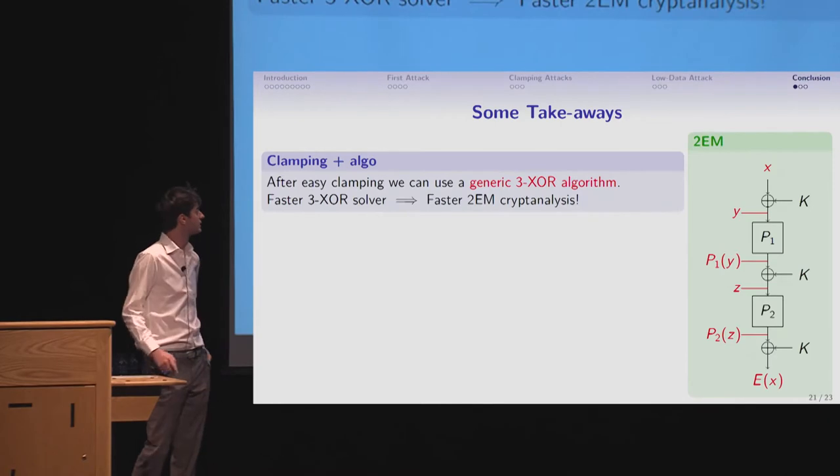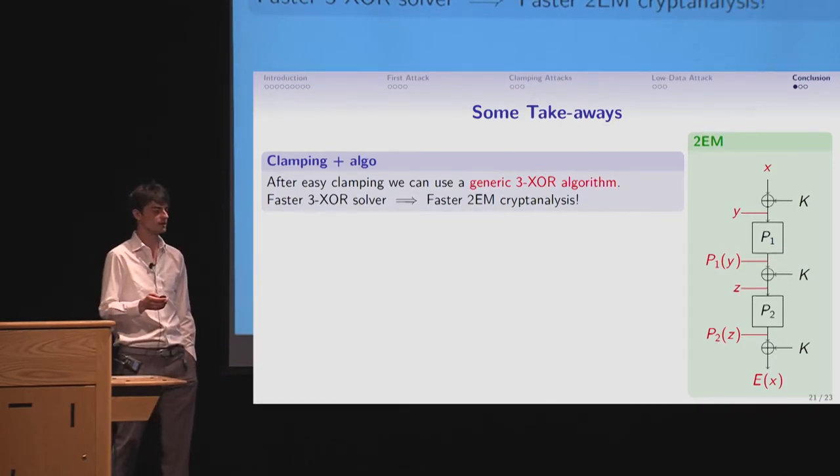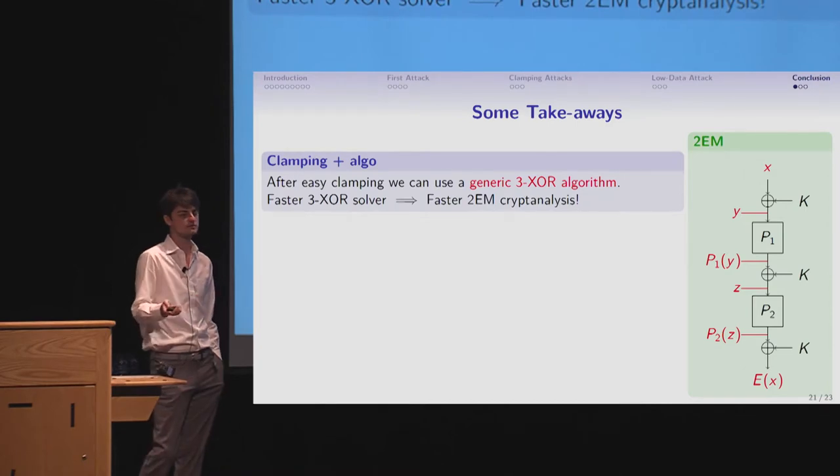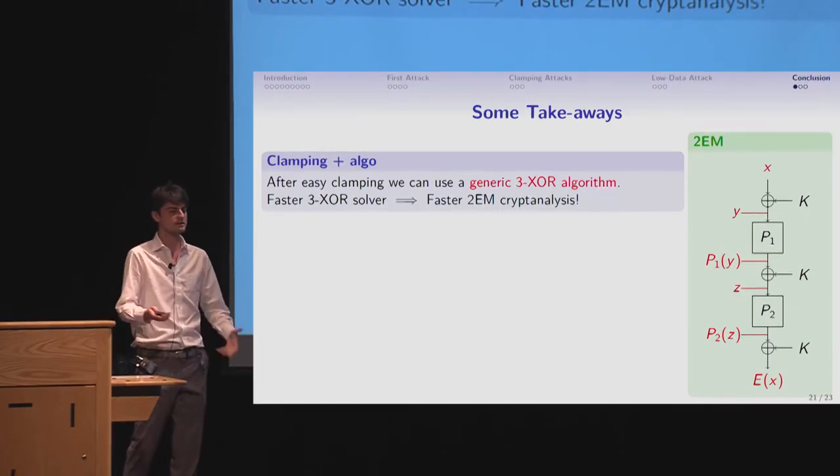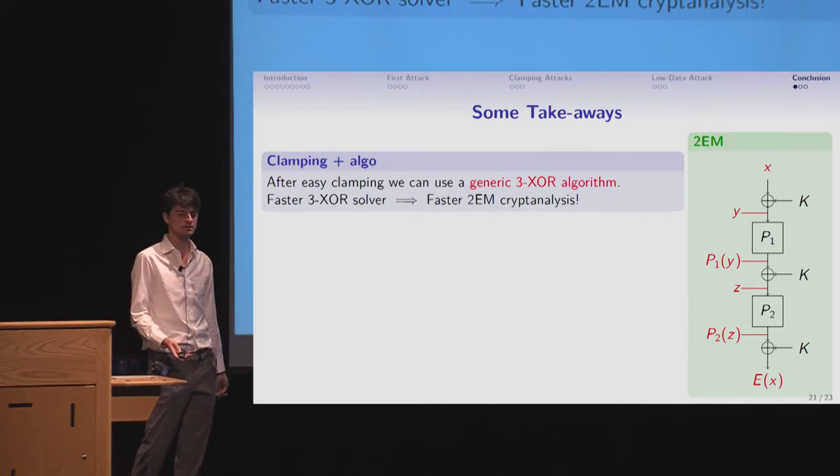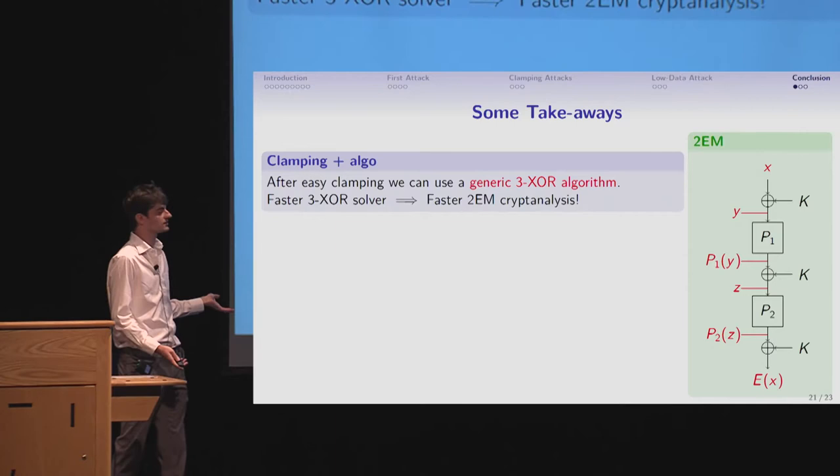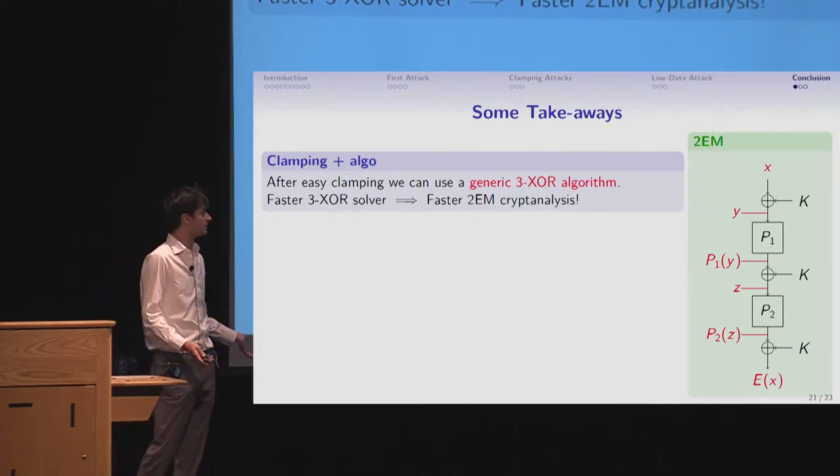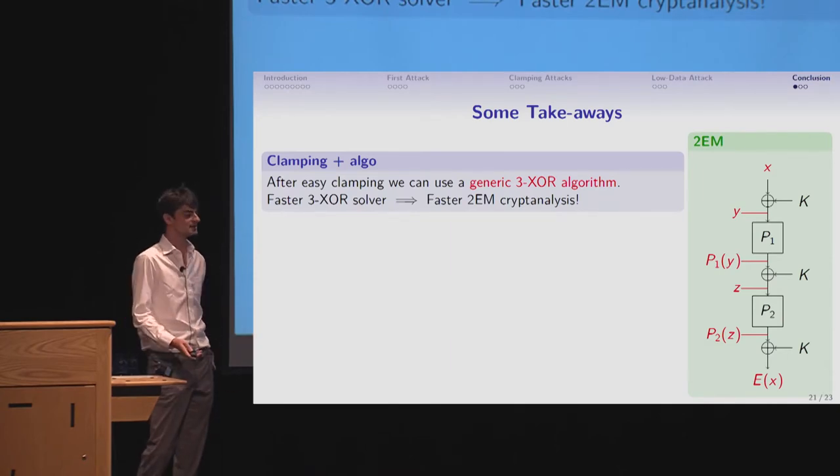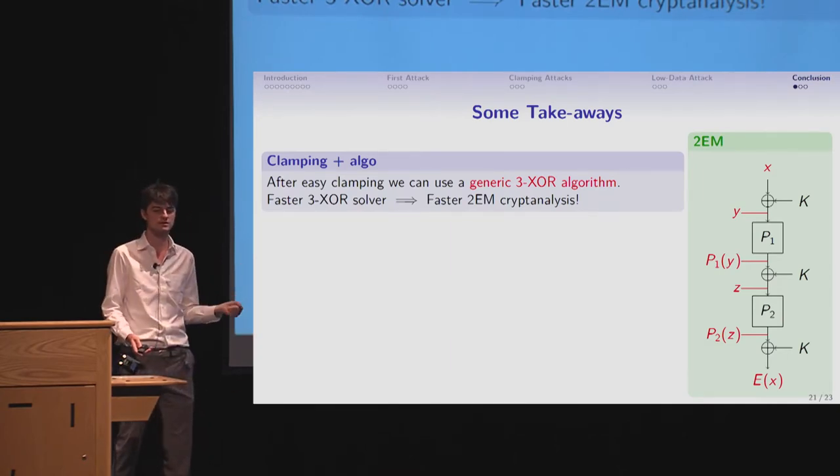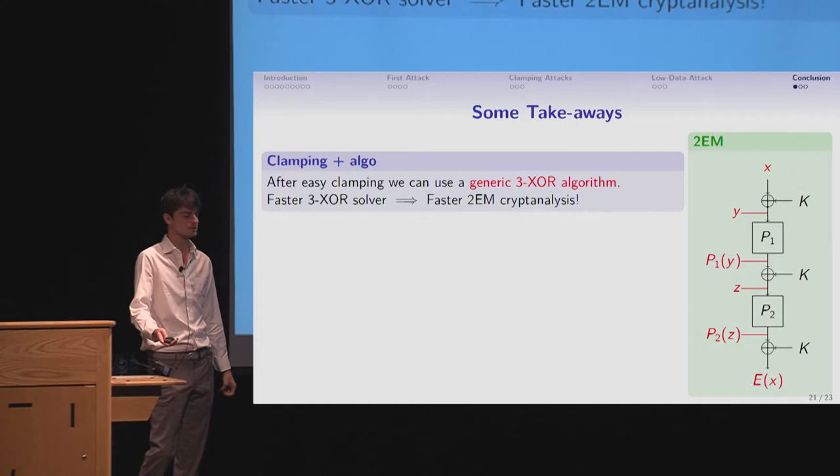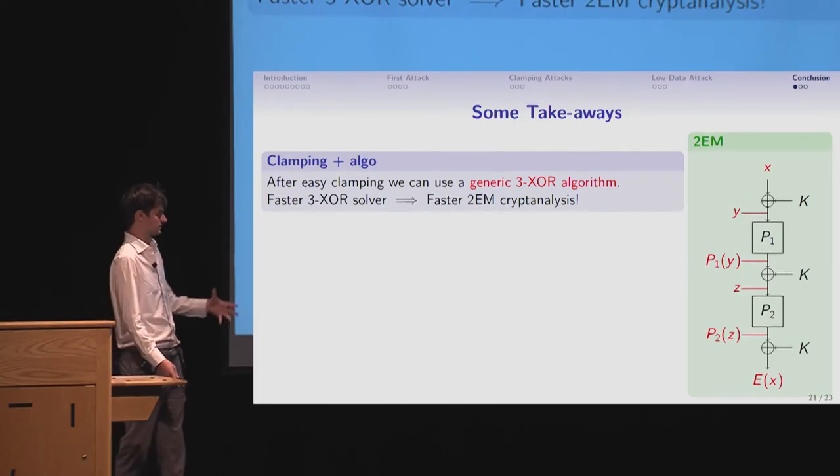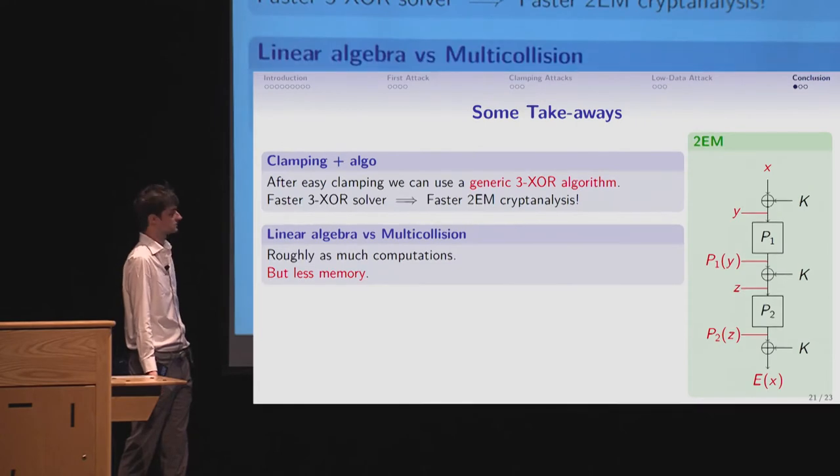OK, so here are some takeaways. So I showed you that after some clamping, we could use any generic 3-XOR algorithm we could find. And at this point of time, we couldn't really have a better time complexity, but who knows? Maybe in the future, we could find faster 3-XOR solver, and that would immediately get us faster two round Even-Mansour cryptanalysis. However, this may also be an indication that because it really seems really hard to solve this 3-XOR problem faster, maybe it explains why it's hard to solve, like, to do the cryptanalysis faster than close to 2 to the n, up to log factor. It's really hard to gain more.